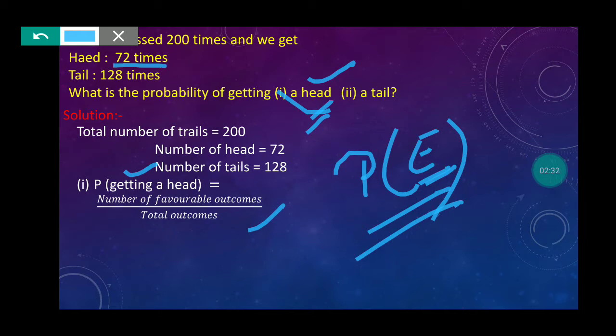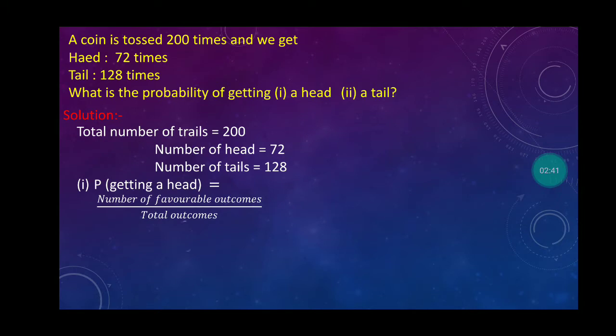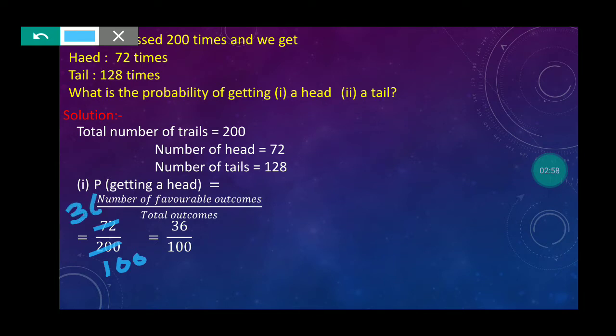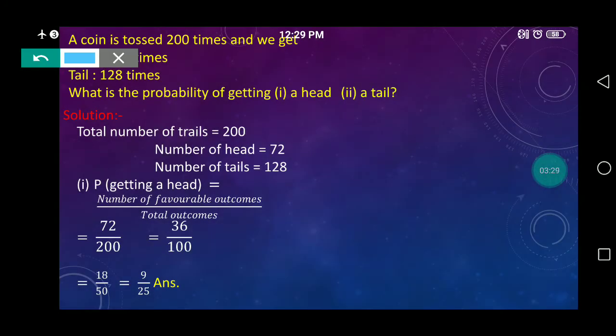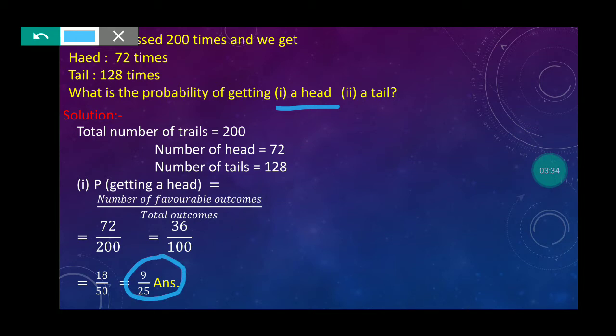Head came 72 times. The coin was tossed 200 times. That means number of favorable is 72 upon total outcomes 200. That is 72 upon 200. It can be simplified by dividing by 2: we get 36 upon 100. Again dividing by 2: we get 18 upon 50. Again dividing by 2: we get 9 upon 25. This is your answer. The probability of getting head is 9 upon 25.